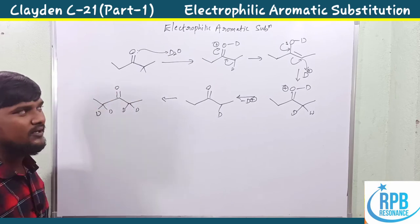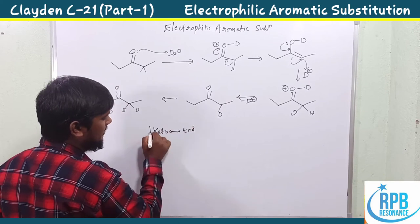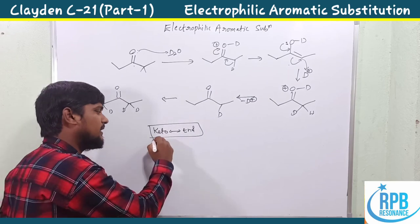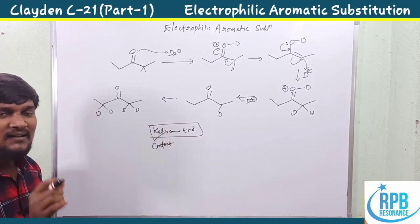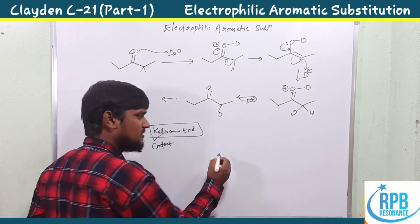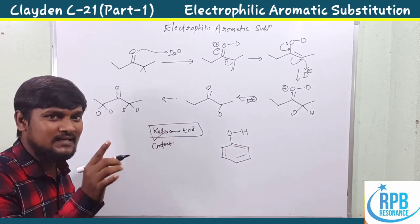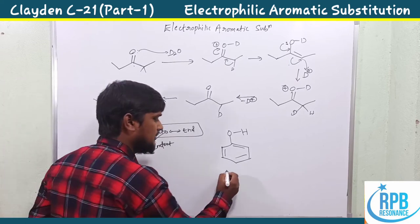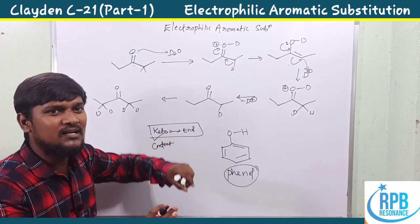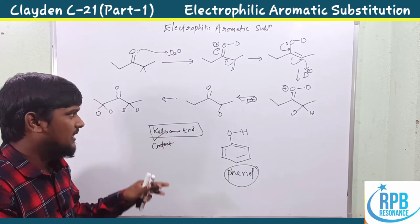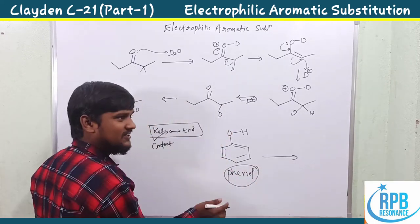The keto form and enol form are in equilibrium with each other. For general aliphatic compounds, the keto content is more. But some aromatic compounds exist only in the stabilized enol form - that is nothing but phenol. So the aliphatic compound treated with deuterium substitutes D⁺ at the alpha position via keto-enol tautomerization.